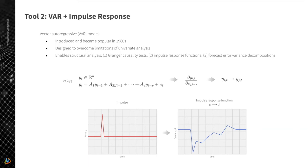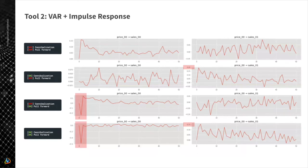Here we have an example of impulse response functions generated from the same simulated data used in the previous example. The VAR model makes some assumptions regarding stationarity and other properties of the series. To make our time series compliant, we first fit a low-capacity gradient boosted decision tree model, subtract its predictions from the time series, and then apply the VAR model to the residual data.